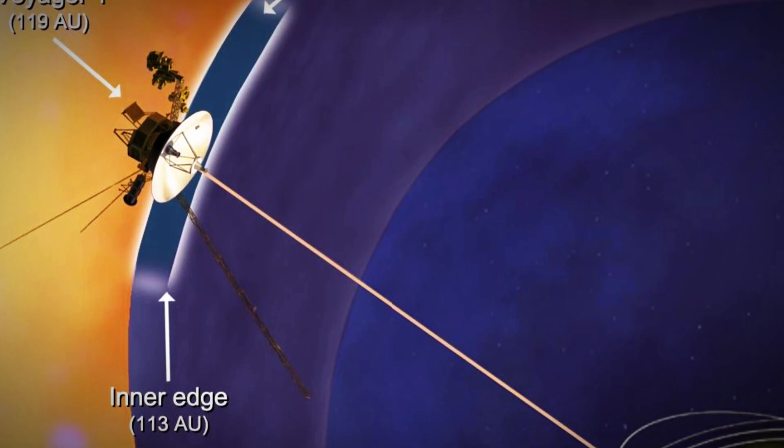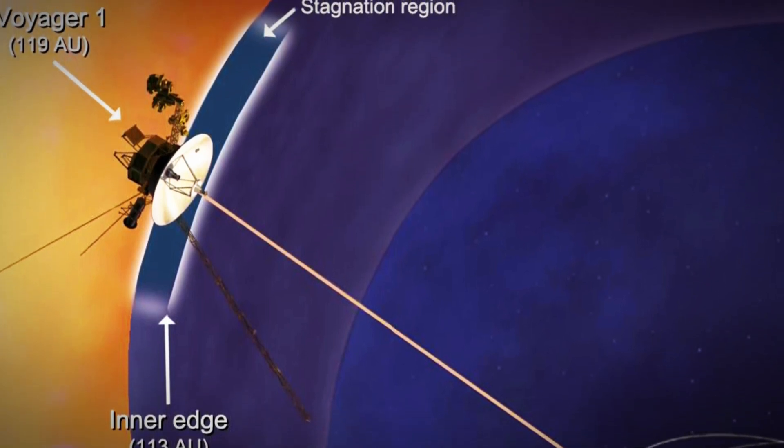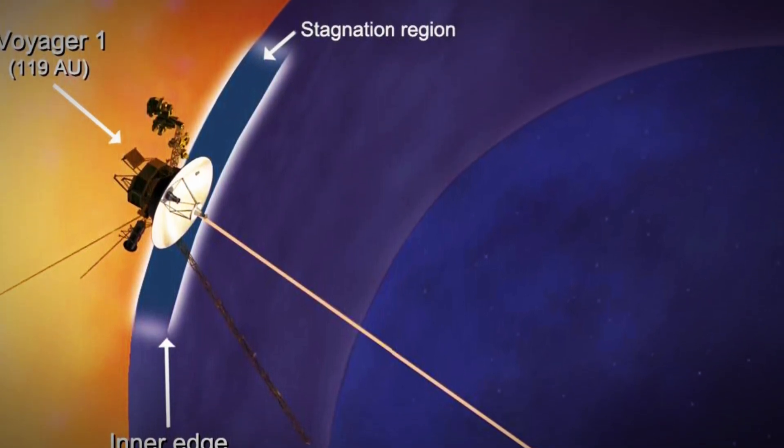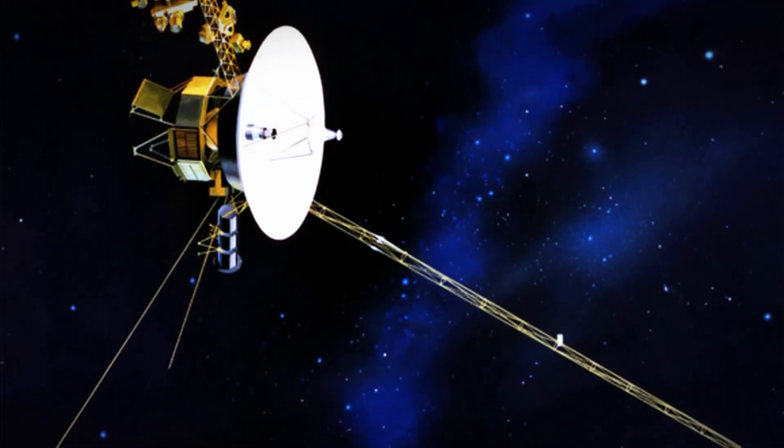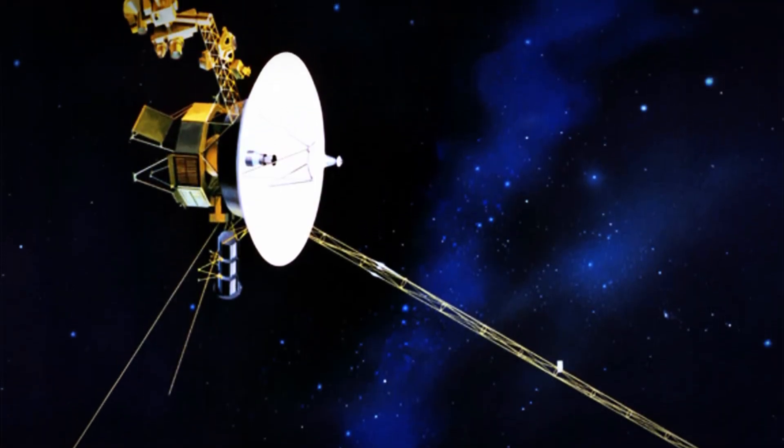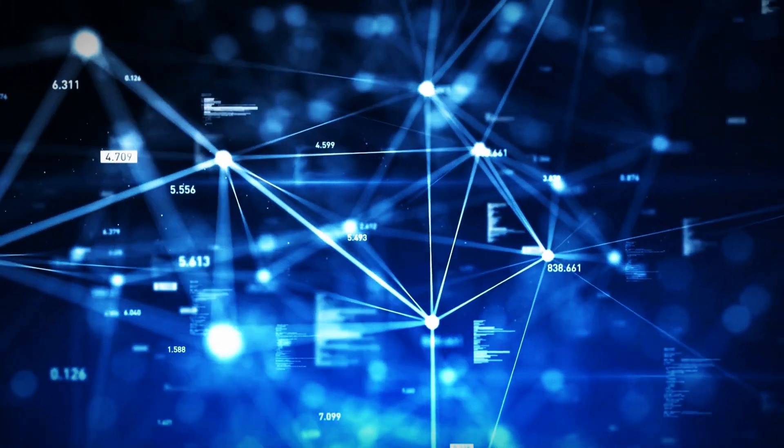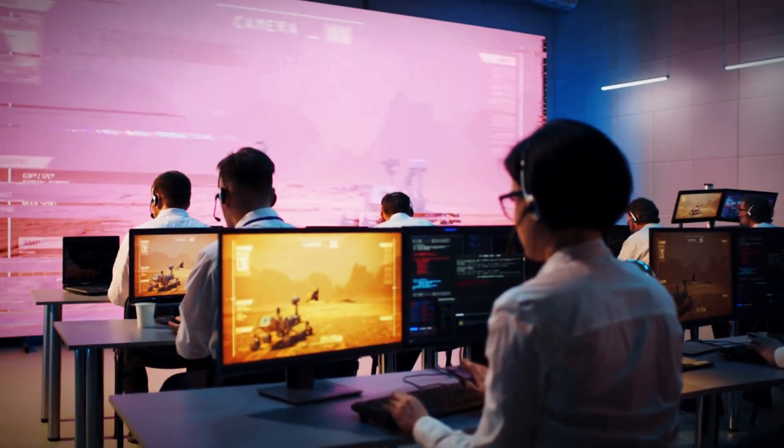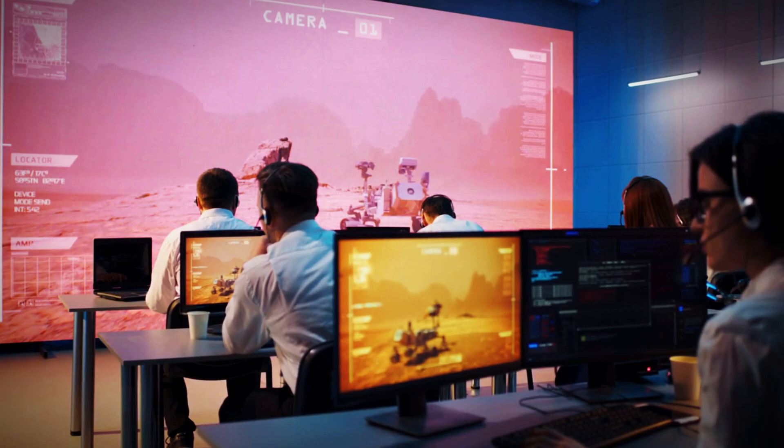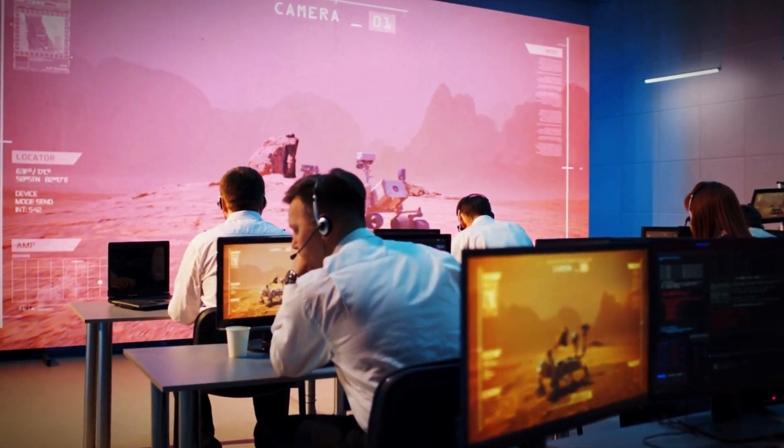Then came the real shocker. Voyager began detecting changes in the heliopause that defied logic. Both Voyager probes had crossed into interstellar space, one in 2012, the other in 2018. But their data didn't align. Scientists were baffled. Was the boundary moving? If so, what was causing it? There was no clear answer, and every theory only raised more questions.